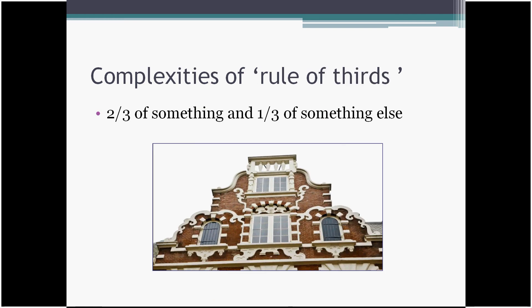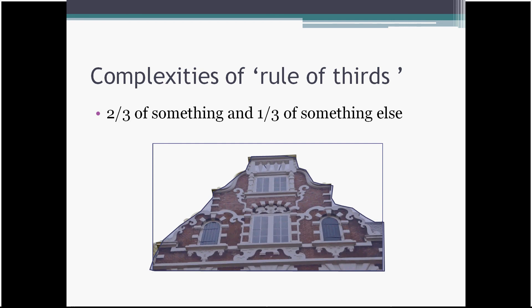Rule of thirds can also mention that one third of something and two thirds of something else. It's not about lines. It's about how much proportion we want to assign. For example, two thirds of the room in the frame is filled by a building. And almost, it's not exactly, but almost two thirds is filled by a building and one third by the sky. Here we are talking about volume or proportion rather than the location we discussed previously. So rule of thirds can also mention the proportion, the percentage.